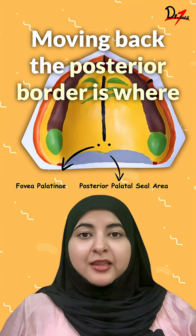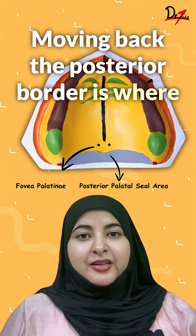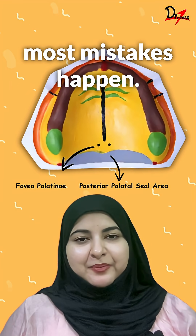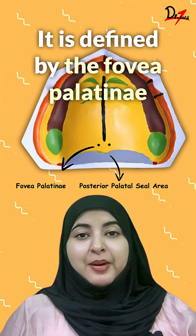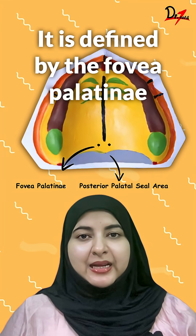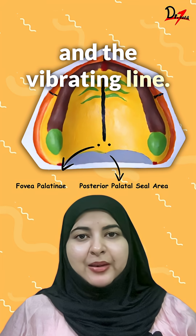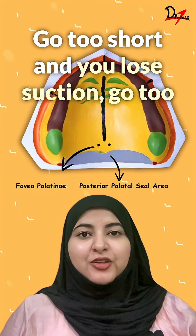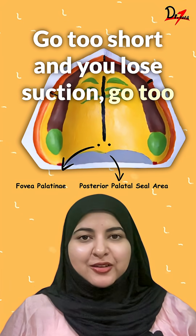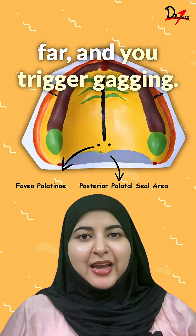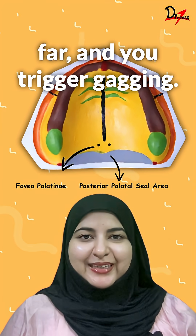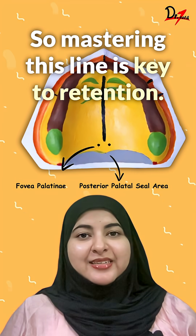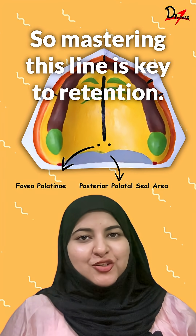Moving back, the posterior border is where most mistakes happen. It is defined by the fovea palatinae and the vibrating line. Go too short and you lose suction; go too far and you trigger gagging. So mastering this line is key to retention.